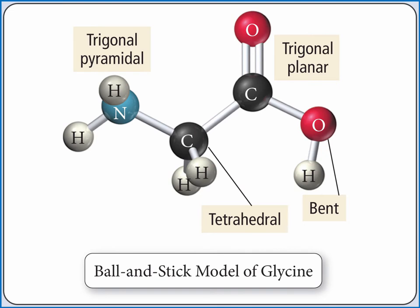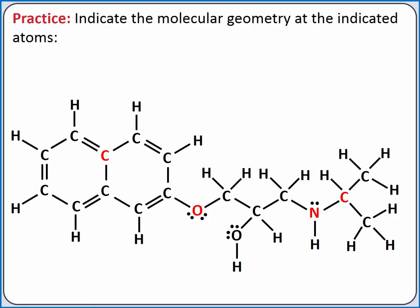Applying the molecular geometry at each atom allows us to envision the structure three-dimensionally. We can apply VSEPR theory at each interior atom to as large of a molecule as we want. For example, let's determine the molecular geometry at each of the four atoms in red in this organic molecule.